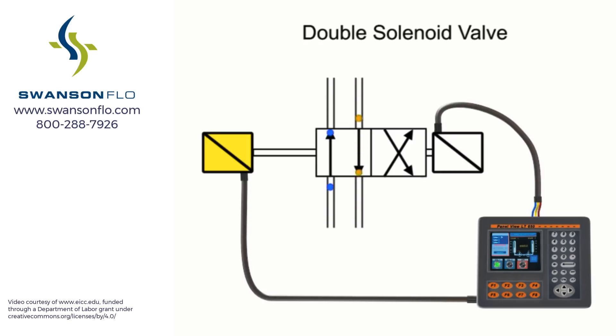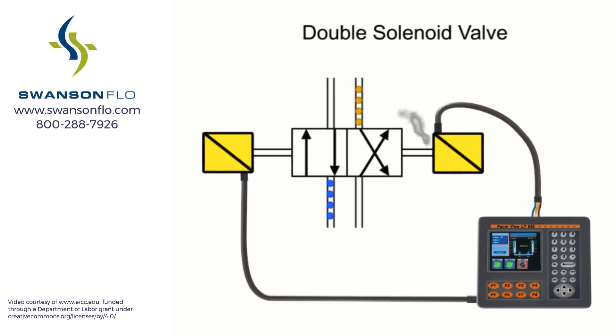Since there is nothing holding the valve in the shifted position other than friction, these types of valves should be mounted horizontally to avoid self-shift due to excessive airflow or vibration. If both solenoids are energized at the same time, the solenoids will work against each other and may cause the spool to become stuck.